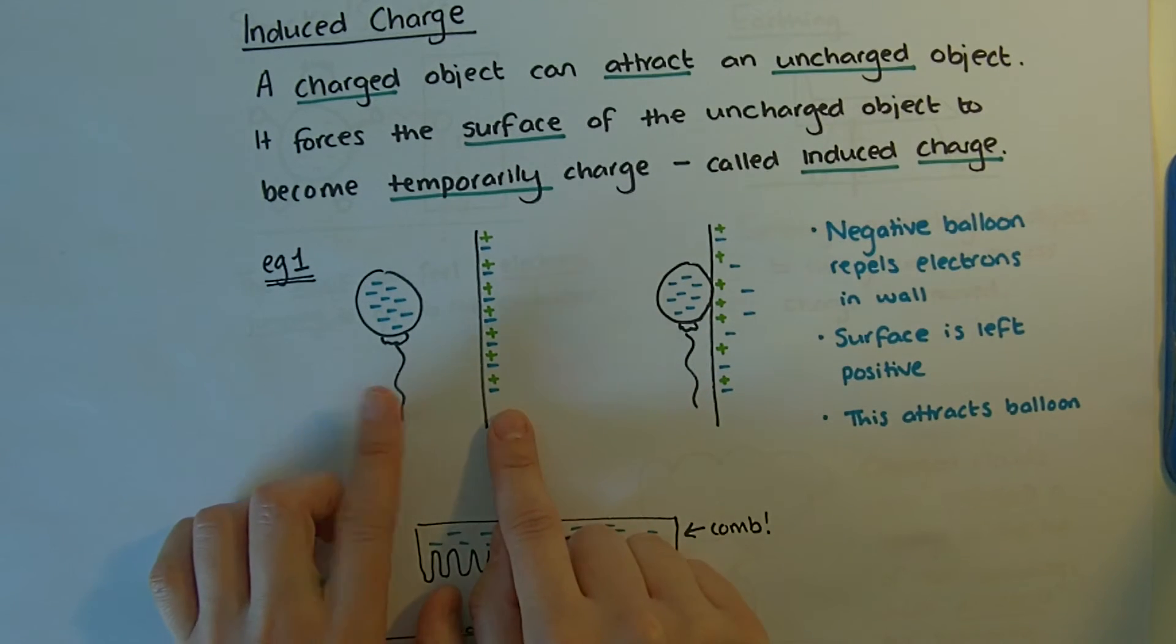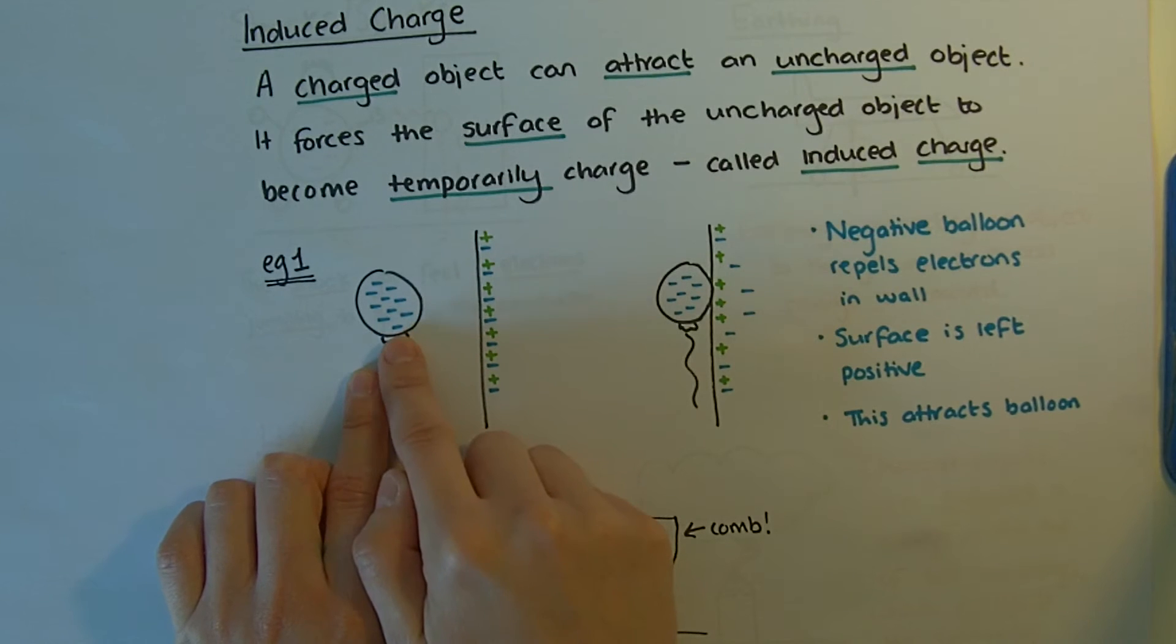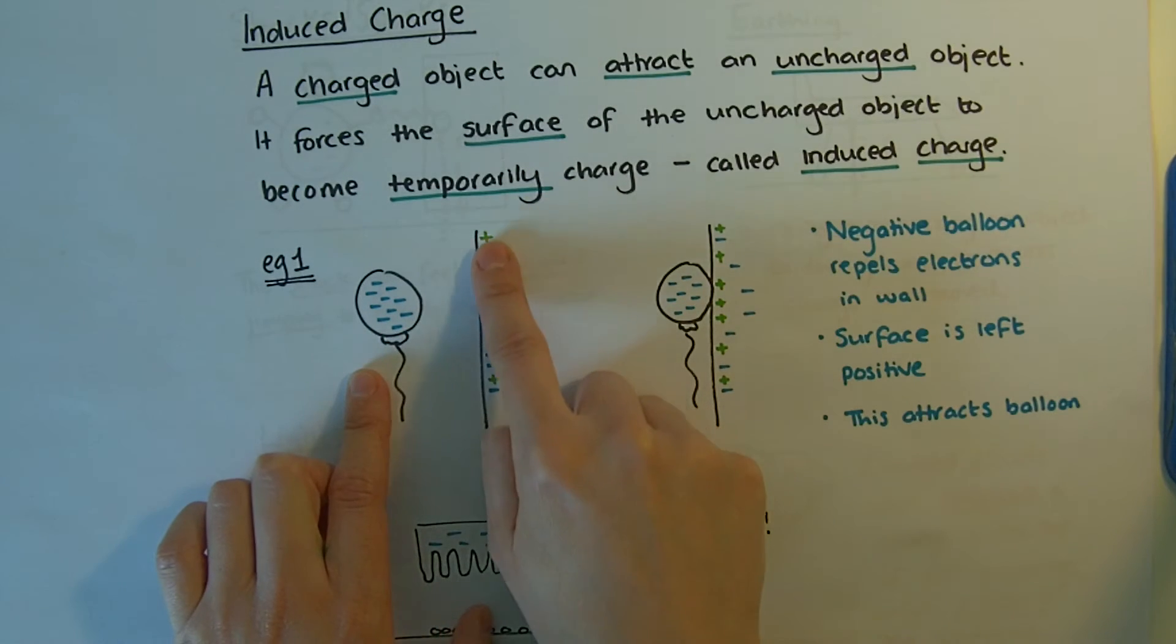Let's take a look at an example. I've got a balloon and a wall. The balloon is the charged object, we've rubbed it previous to this and made it negative overall. Our wall, we haven't rubbed it at all, it's neutral, it's got positives and negatives.